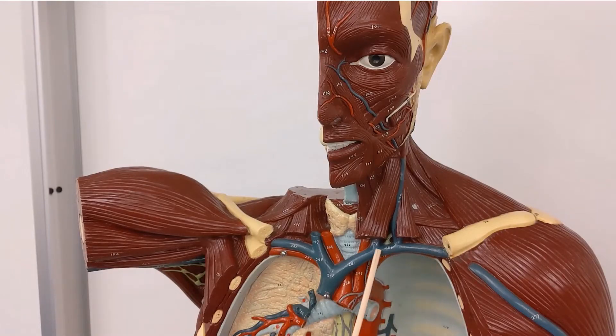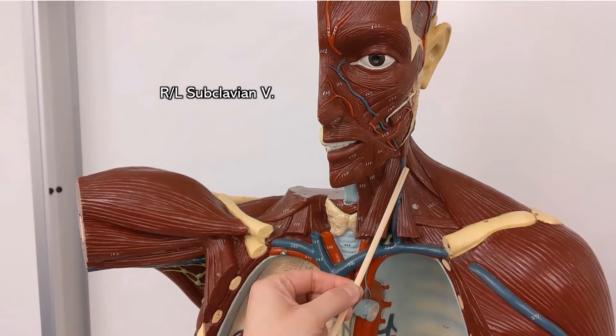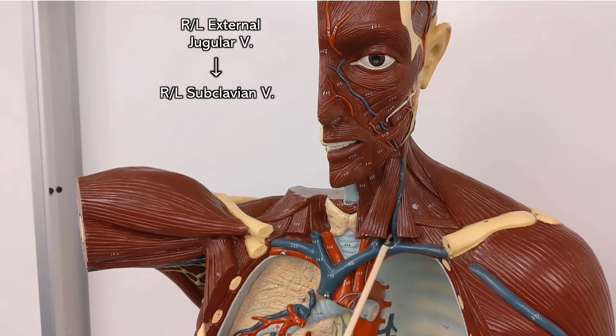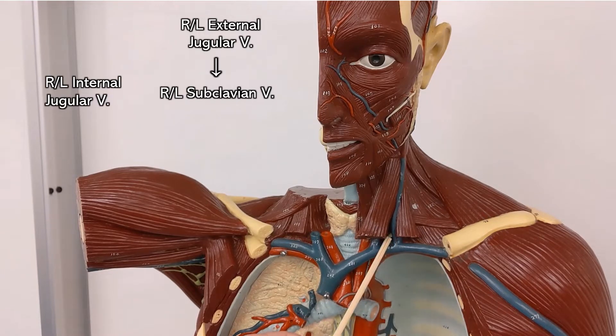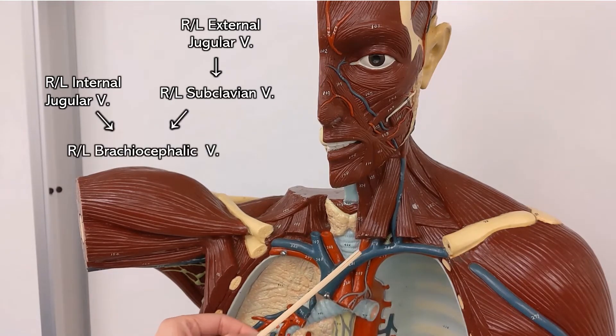So on Harvey we can see the left subclavian and right subclavian. This coming in is the external jugular. This peeking underneath from the sternocleidomastoid is the internal jugular. Once both jugulars meet the subclavian, it becomes the brachiocephalic vein.